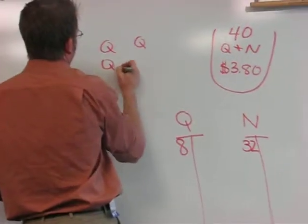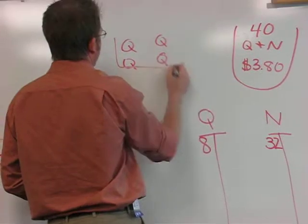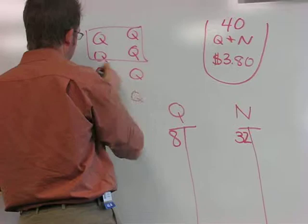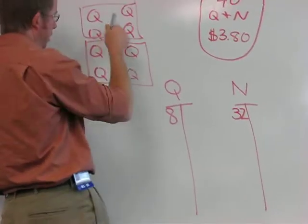quarter, quarter, quarter, quarter, draw a dollar bill around those four, quarter, quarter, quarter, quarter, draw a dollar bill around those four, it's $2.